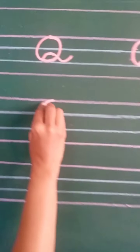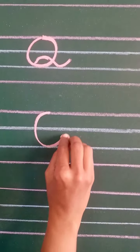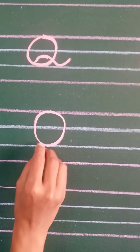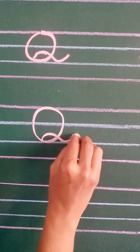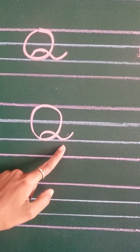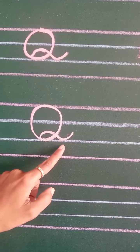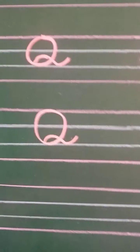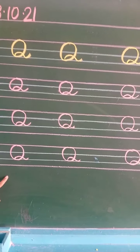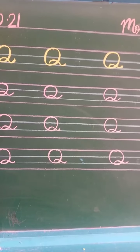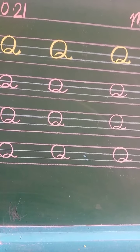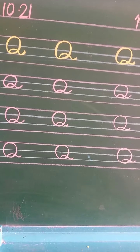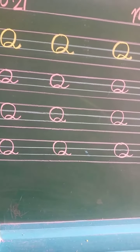So again, make a curve like this. Go up from this point, make a curve and touch the blue line. This is Q. So like this, my dear lovely kids, you have to write the letter Q. You have to do the full page of Q. Now let us draw the picture of Q.